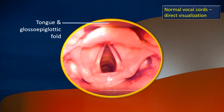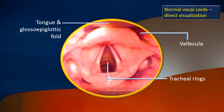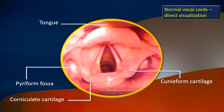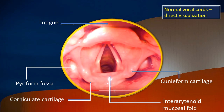Recap: tongue and the glossoepiglottic fold. That is the vallecula on either side. The tracheal rings are seen from the top — if it is very well lit, as in this case, those are the tracheal rings; the vocal cord is partially open. More laterally is the pyriform fossa. There is a cuneiform cartilage and a corniculate cartilage close to the upper part of the arytenoid cartilage — those are the corniculate and the cuneiform cartilages. There is also a small wedge of mucosa in between the two arytenoids, called the inter-arytenoid mucosal fold.